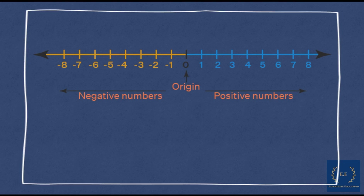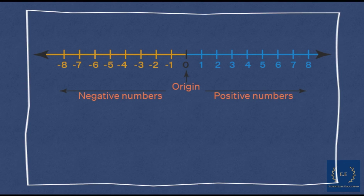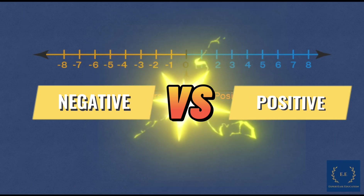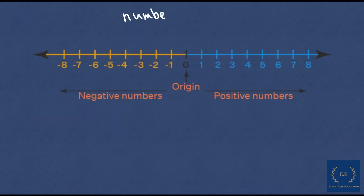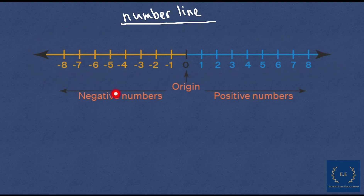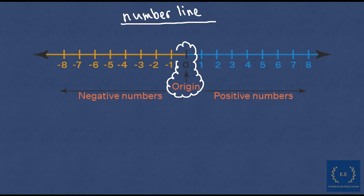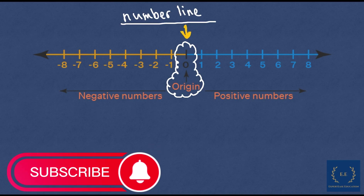The first thing that we need to understand when learning about positive and negative numbers is the number line. If you take a look at the image, this is the representation of a number line. A number line represents a sequence of numbers where we start from the origin, which is considered to be our starting point — the number 0.